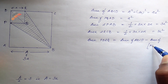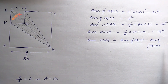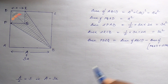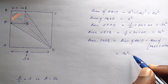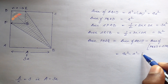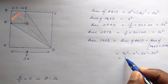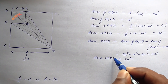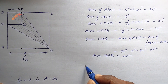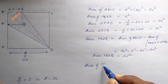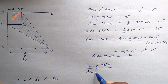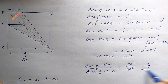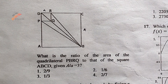The area of quadrilateral PBRQ equals area of ABCD minus area of small square PQRD minus area of triangle PAB minus area of triangle RCB. That gives us 9a² minus a² minus 3a² minus 3a² equals 2a². The ratio of area of PBRQ to area of ABCD equals 2a² divided by 9a² equals 2/9. So option 1, which is 2/9, is the correct answer.